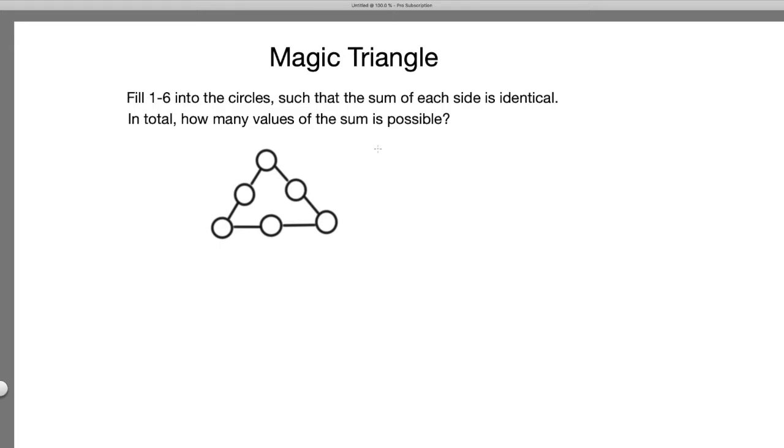For each possible value, you have to find a way of placing 1 to 6 into these six circles.